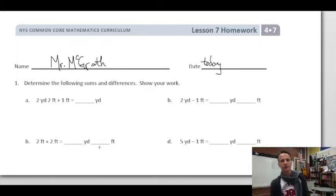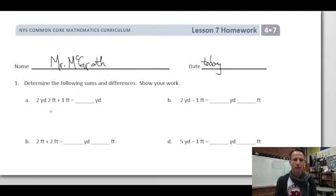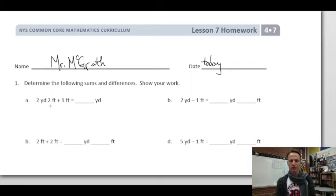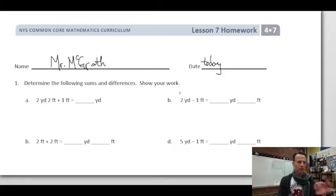Determine the following sums and differences — show your work. We can't just write a number; we need to show the path we followed to get there. So: two yards two feet plus one foot. We have pairs here — addition and subtraction — similar examples with a connection between them.